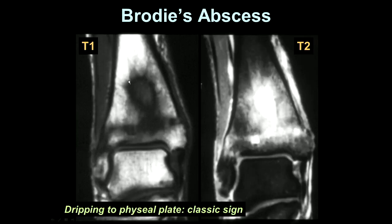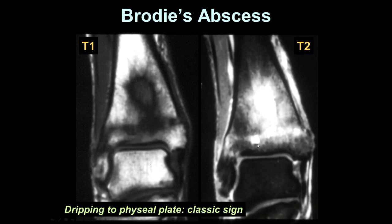Very often, Brodie's abscess has an appearance which drips to the physeal plate. Here is the lesion in the metaphysis, and here is this dripping appearance extending to the physeal plate, and that is very specific for Brodie's abscess.